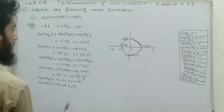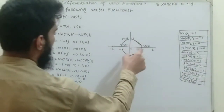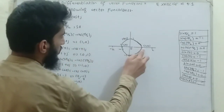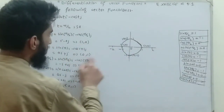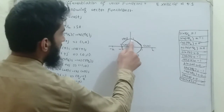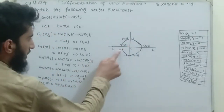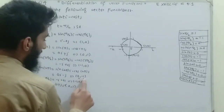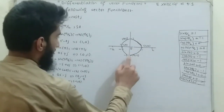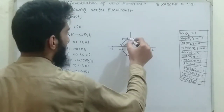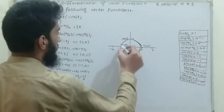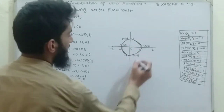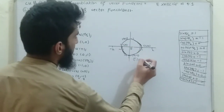Now I plot these points in the graph. The point (1, 0) is here, (0, 1) is here, (-1, 0) is here, and (0, -1) is here. The graph passes through these four points and makes a round circle — this is actually the equation of a circle. This is the graph for part b.